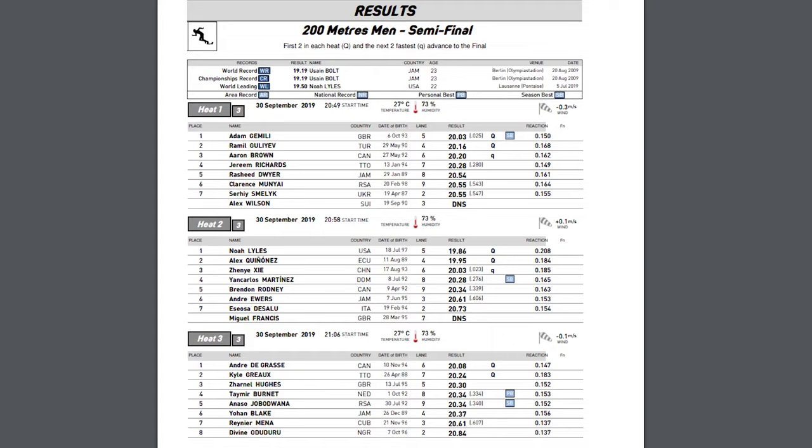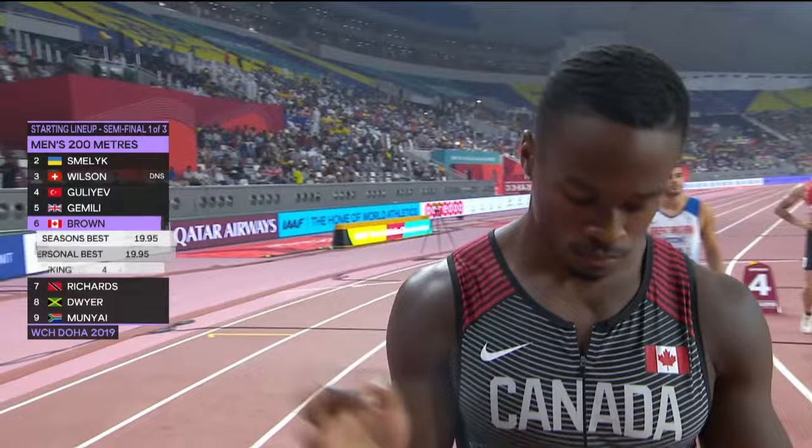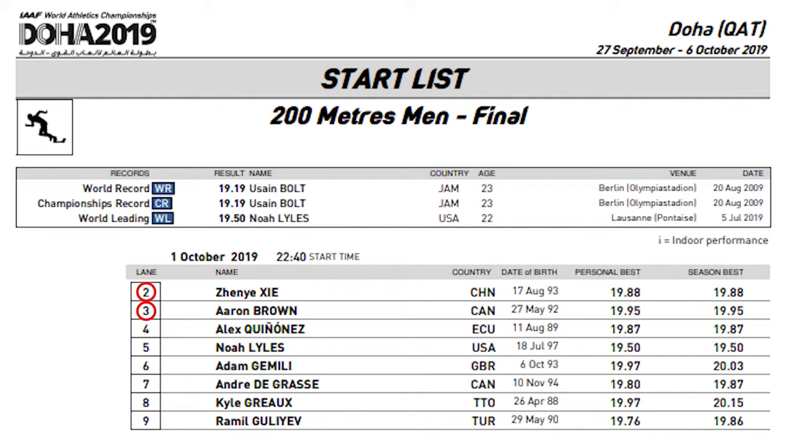Then the final two little Q's will be placed in lanes two and three. So two and three will be randomly drawn for Aaron Brown and Zizhenyi. Two, three, four — random. Check.